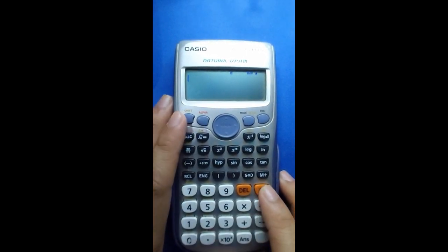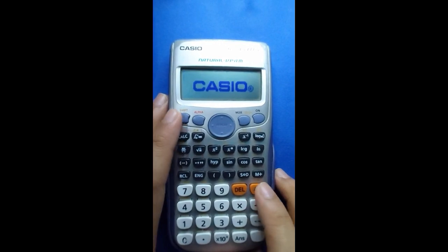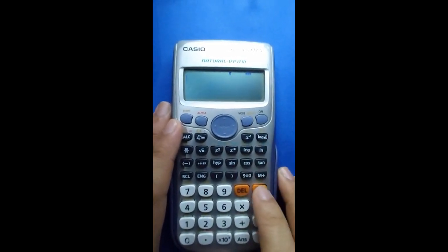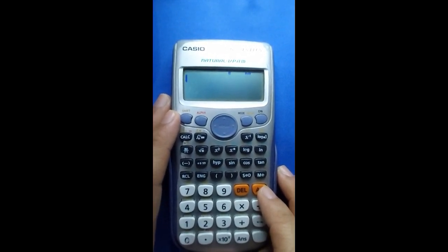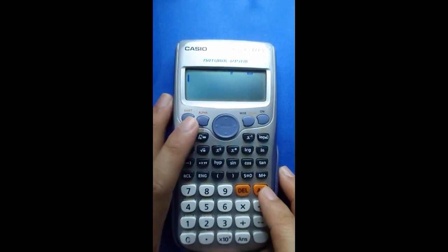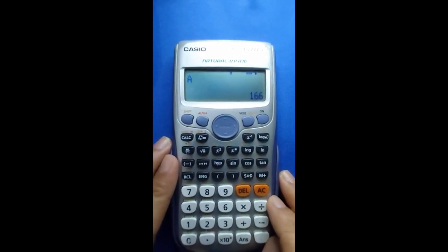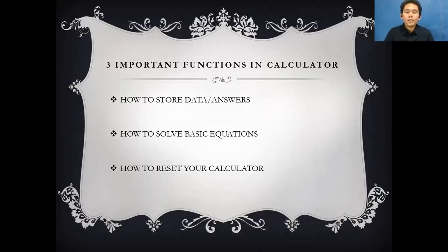Let's see if the data is stored. We close the calculator and turn it back on. To extract the value we stored, press Alpha, then A, and the stored value is 166. That is the way of storing data.